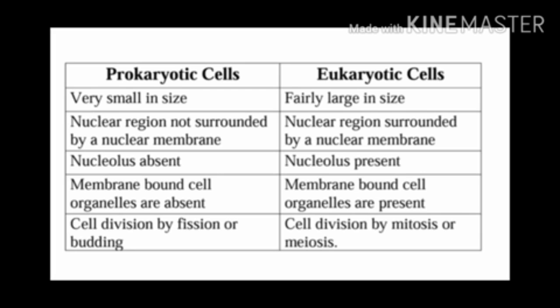First we will know the difference — two to three points. Prokaryotic cells are very small in size, but Eukaryotic cells are fairly large in size. Second point: in Prokaryotic cells, the nuclear region is not surrounded by a nuclear membrane — there is no membrane-bound structure. But in Eukaryotic cells, the nuclear region is surrounded by a nuclear membrane for the protection and maturity of the cell.